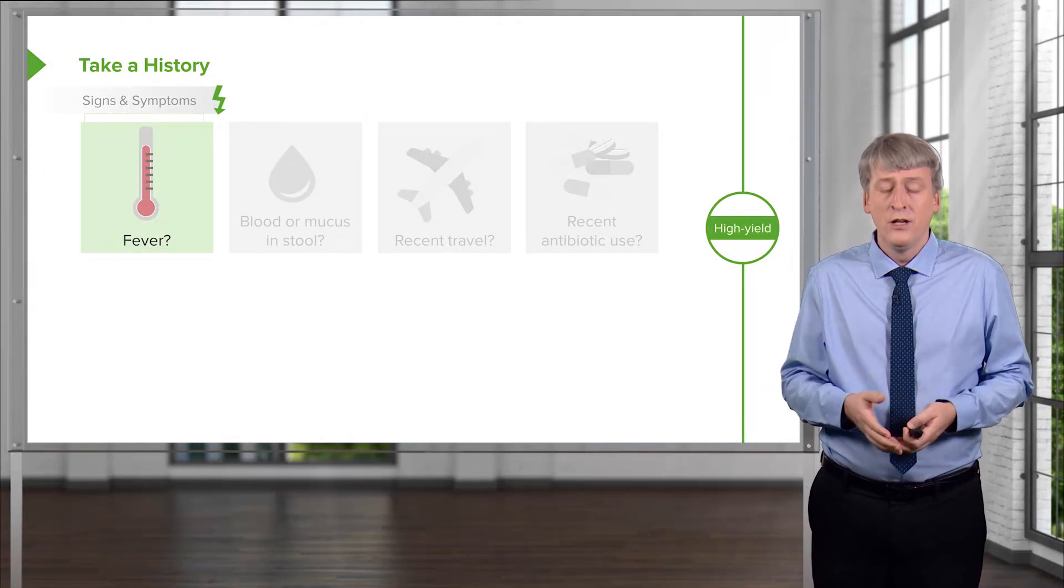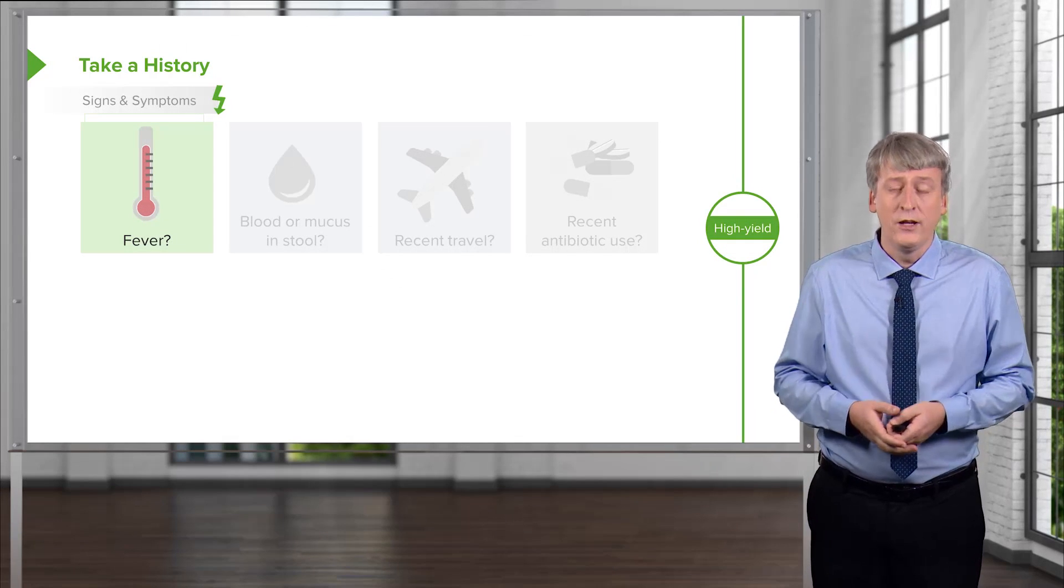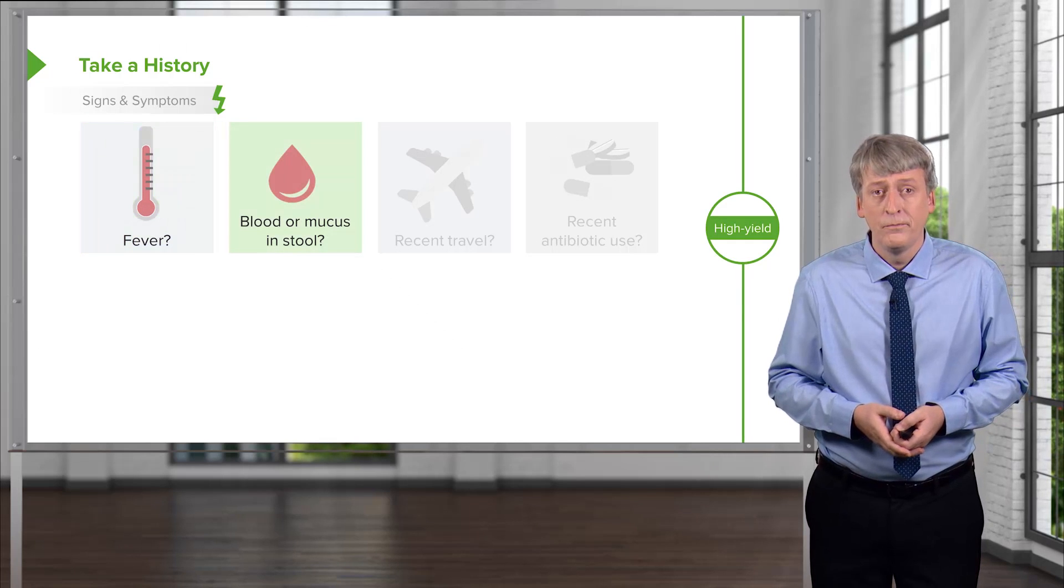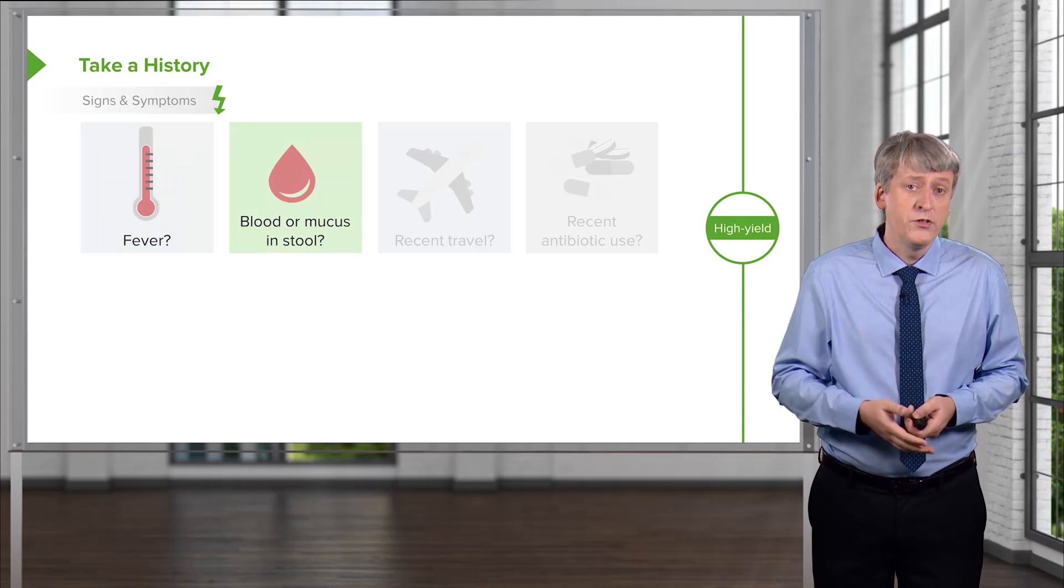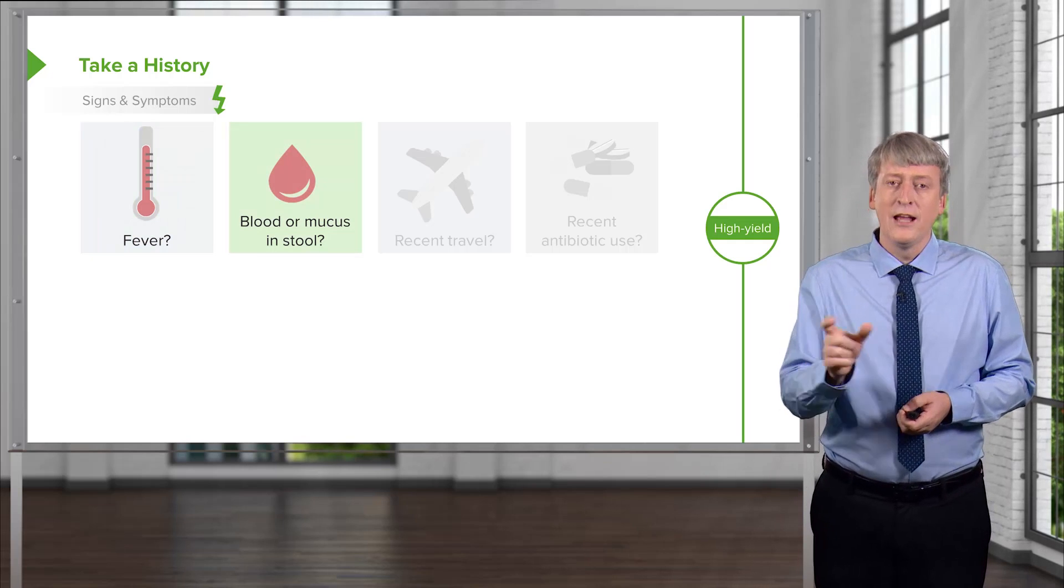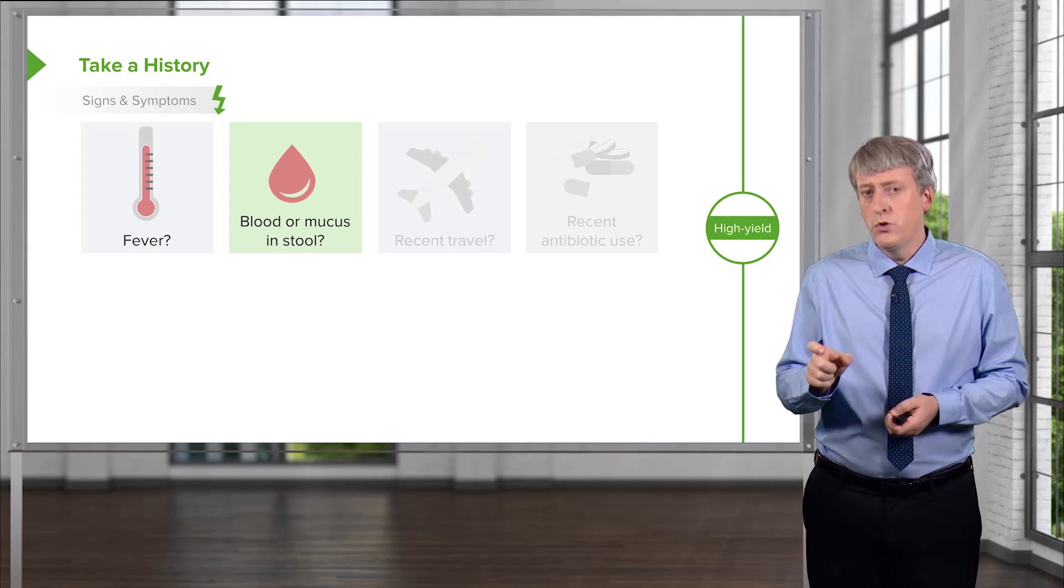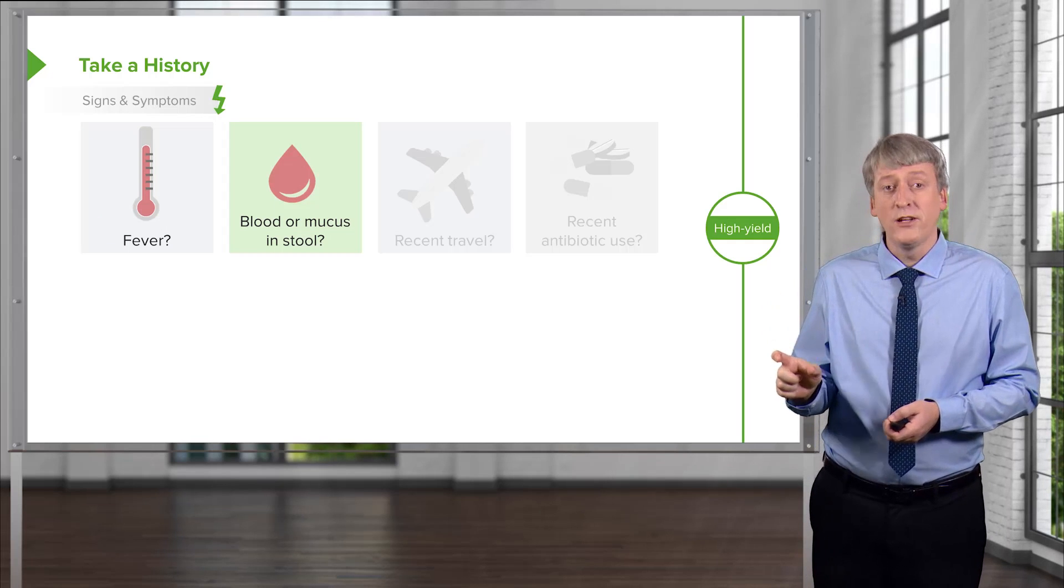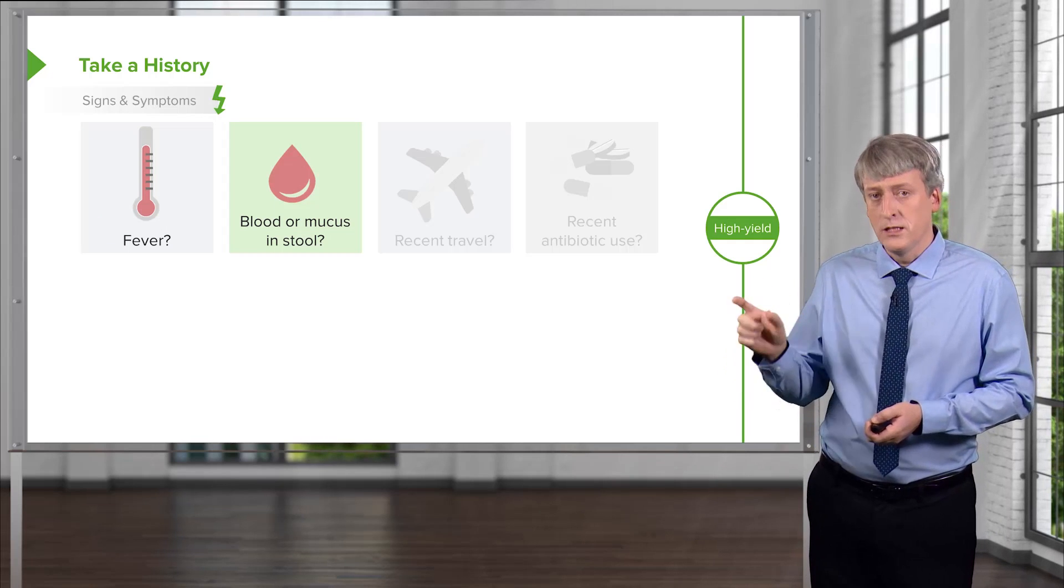First is obviously fever. Children with infectious diarrhea typically may have a fever. Ask about blood or mucus in the stool. This may tip you off that this is a bacterial as opposed to a viral pathogen. Most bacterial gastroenteritis requiring treatment is bloody.